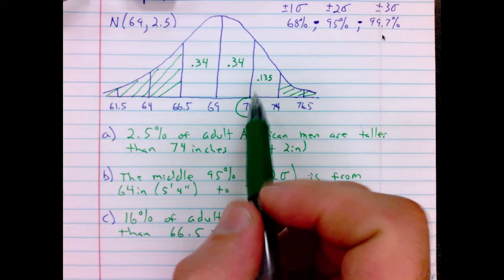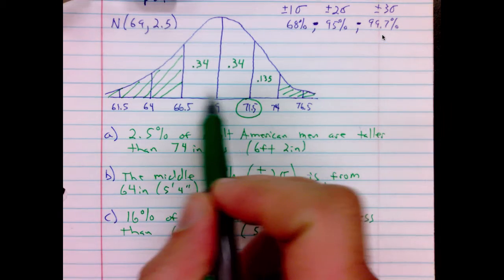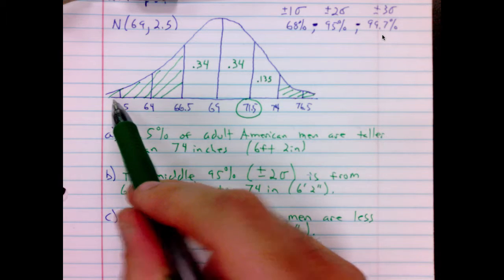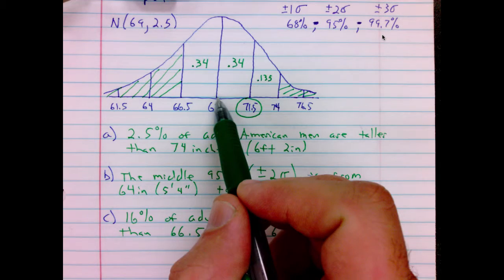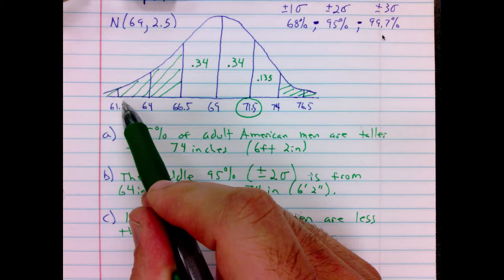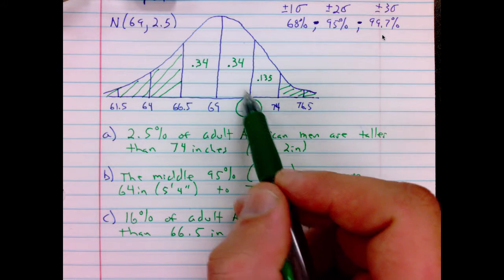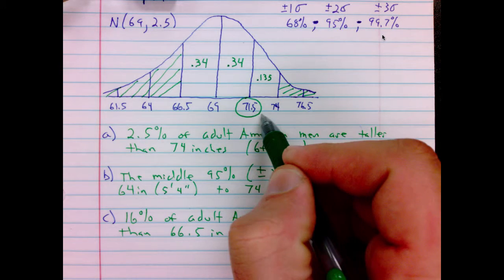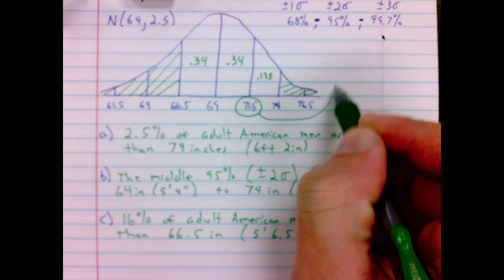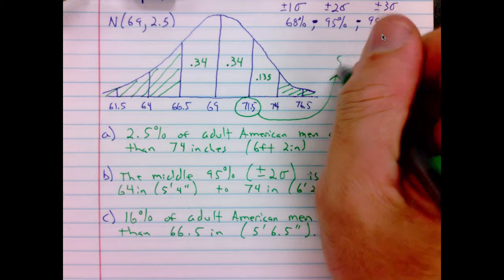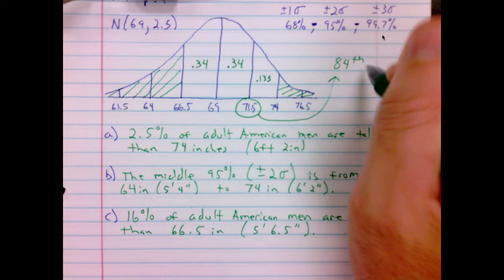Well, we would simply find the area below 71.5. So below 69 is 50%, from 69 to 71.5 is 34%. So 71.5 is at the 84th percentile.